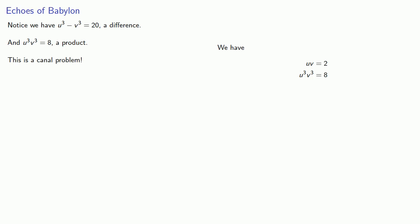And this is a Mesopotamian canal problem. At least, it can be solved as one. So we might start out this way. The product of two numbers is 8, and their difference is 20.